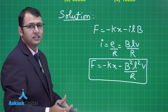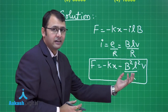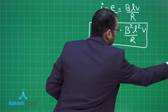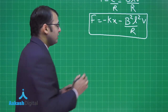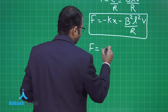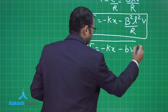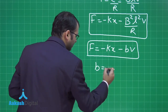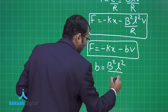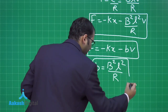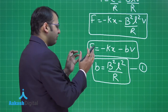Focusing on this equation: if we hide the velocity term we get f equals minus kx, which is perfect SHM for small x. But the additional velocity-dependent term indicates damped oscillation, consistent with the amplitude decrease stated in the problem. Comparing with the standard damped oscillation equation, the damping constant b equals B²L²/R.